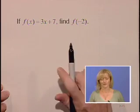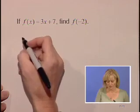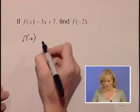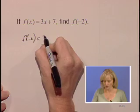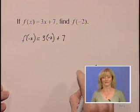Making sure we keep it inside parentheses so that negative stays with the value 2. Our notation, f of negative 2 is equal to 3 times negative 2 plus 7.